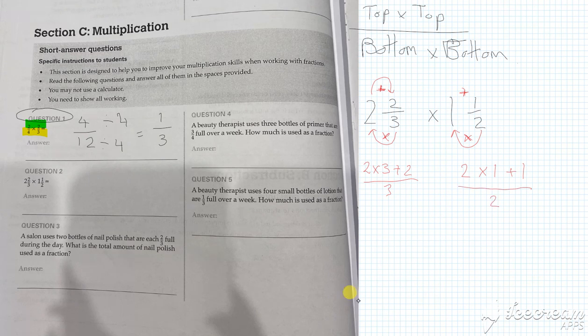And then we're going to work out, so 2 times 3 is 6, plus 2 is 8, over 3. 1 times 2 is 2, plus 1 is 3, over 2.